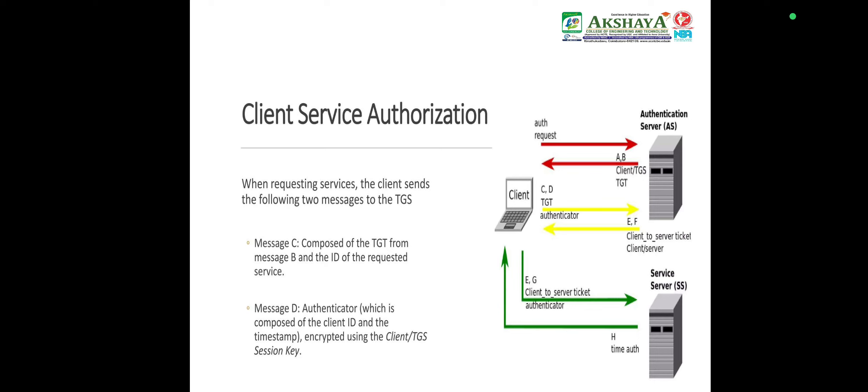Upon receiving messages C and D, the TGS retrieves message B out of message C and decrypts message B using the TGS secret key to get the Client-TGS session key. Using this key, the TGS decrypts message D and sends two messages to the client. Message E: the client-to-server ticket including the client ID, client network address, validity period, and client-server session key, encrypted using the service secret key. Message F: the client-server session key, encrypted with the Client-TGS session key.